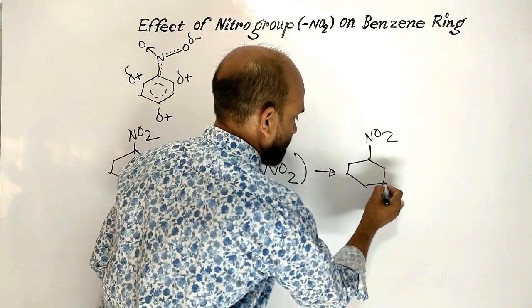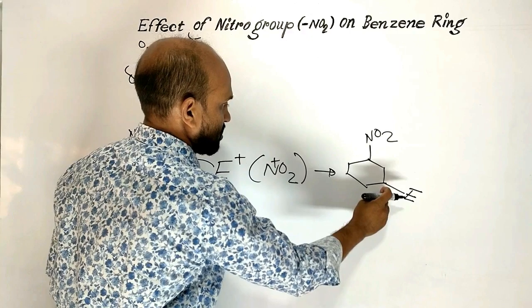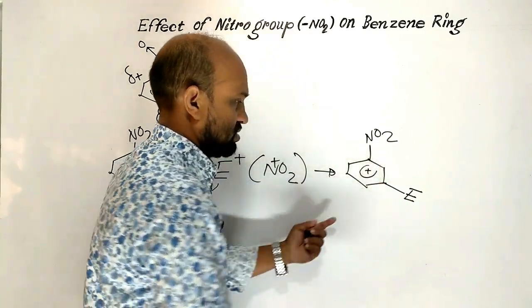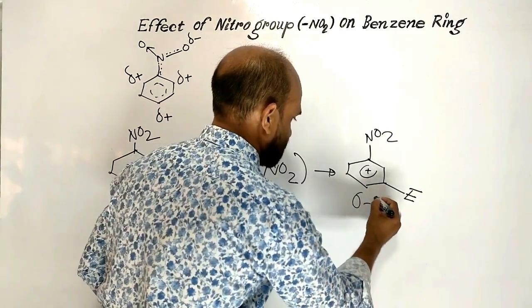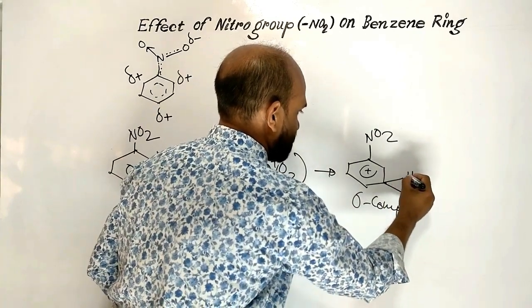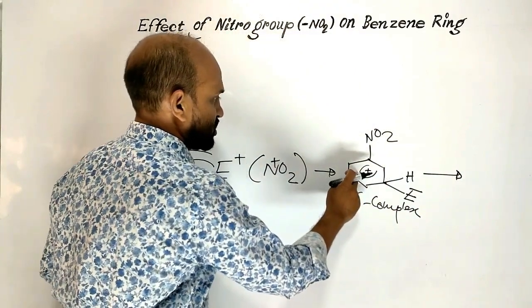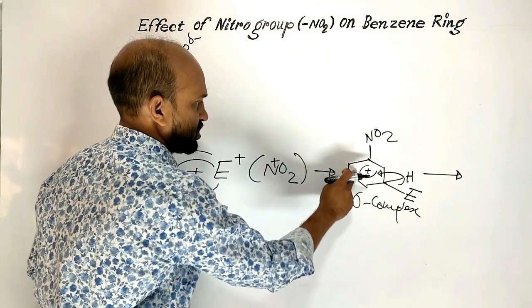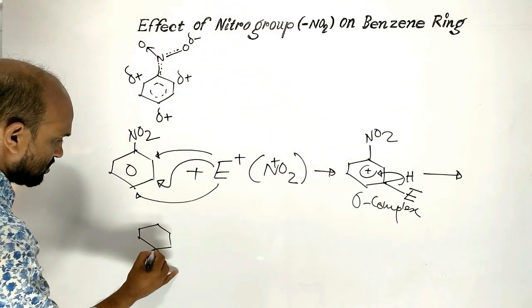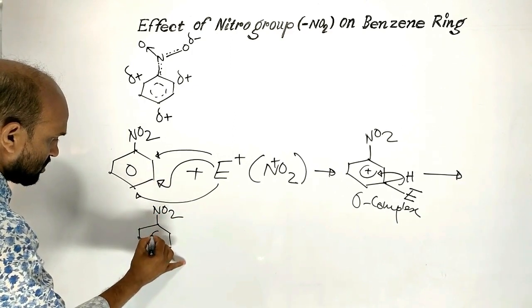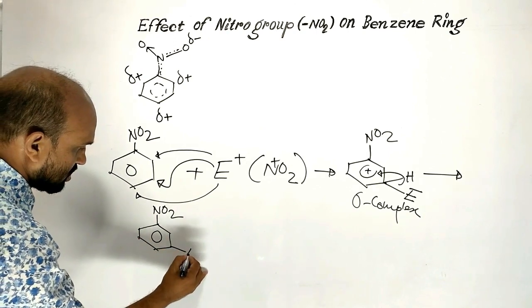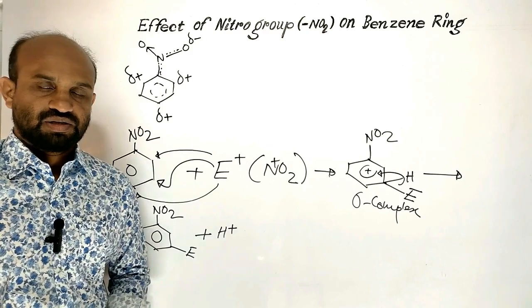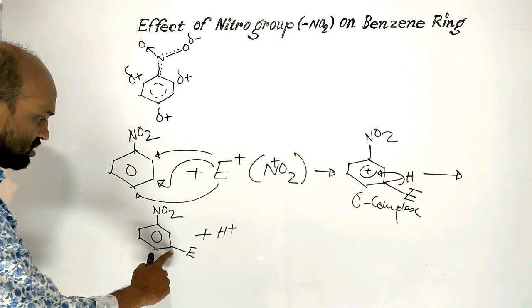With nitro group present, at the meta position the electrophile attaches. Because of the electrophile entering the benzene ring, a positive charge is created, which is known as a sigma complex. Hydrogen is present at that position, and because of this positive charge, the electrons of the carbon-hydrogen bond move to dismiss the positive charge. As a result, the complete benzene ring is restored without any positive charge, the electrophile is retained, and hydrogen gets removed. That is, electrophilic substitution occurs at the meta position.